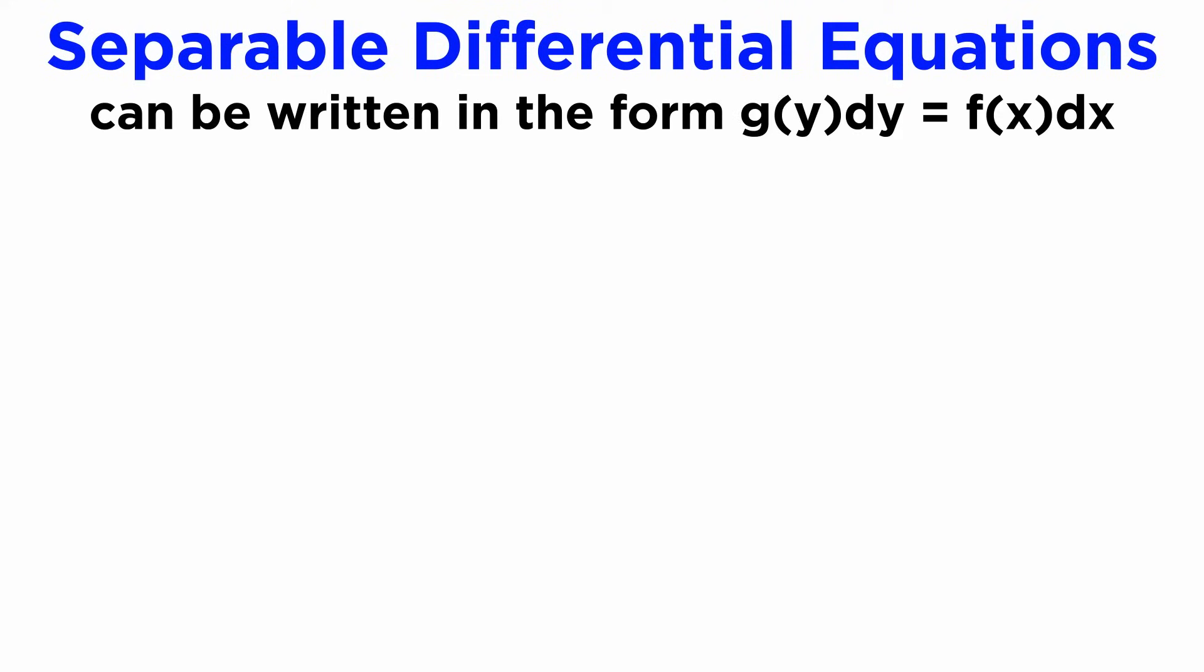The simplest type of DE is the separable differential equation, which is anything that can be written in the form g of y dy equals f of x dx, where y is an unknown function of x, and f and g are general functions.